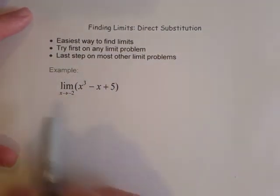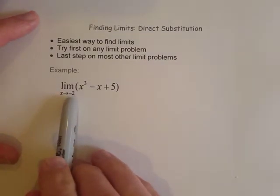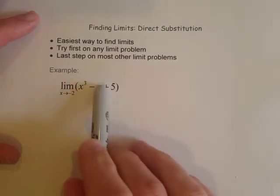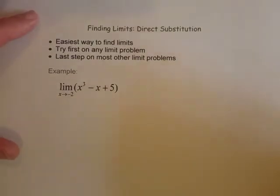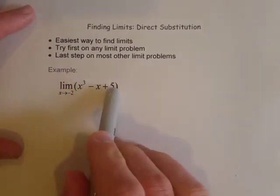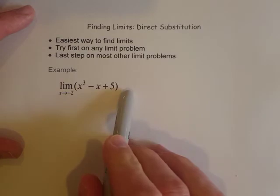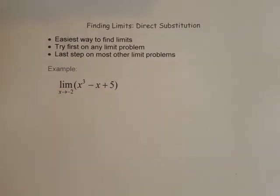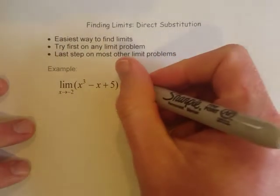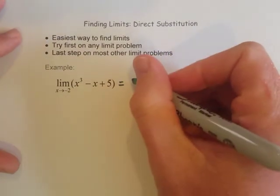So if I have a limit like this, limit as x approaches negative two of this expression, what I should try first is just plug in the negative two and see if it gives you a value. If it does, then you're good to go, and you can just be done with the problem at that point.